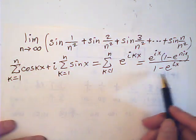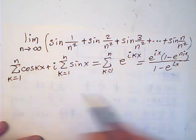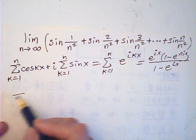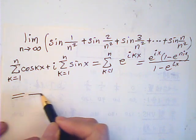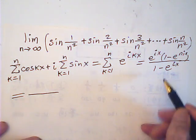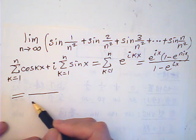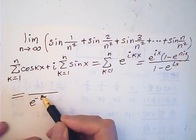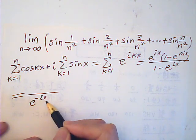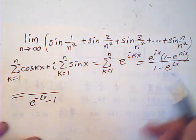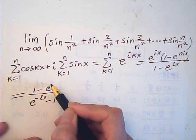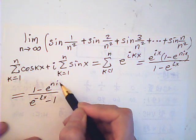And then I multiply by e to the negative ix, just to simplify. So this one is equal to: the denominator will be e to the negative ix minus 1, and on top it will be 1 minus e to the nix.